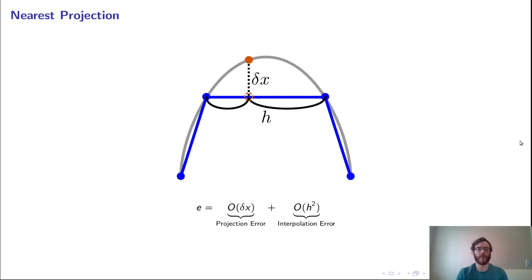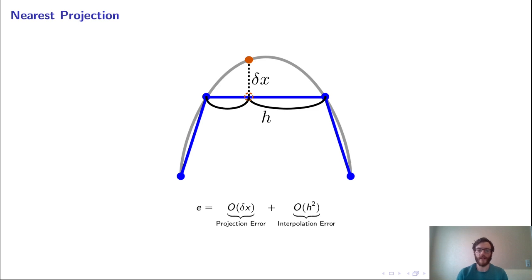Extending this for nearest projection mapping: we need to provide the edge connectivity between all vertices. The first step is to project the output vertex onto the nearest surface — the projection step. Once we have that location on the nearest surface, we perform a bilinear interpolation to the vertices on the input mesh. The error for nearest projection is formed by two parts: the projection error from the initial projection step, which is first-order accurate, and the interpolation error from the bilinear interpolation step, which is second-order accurate with regard to the edge length throughout the mesh.